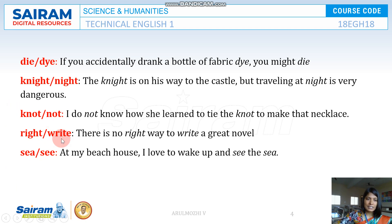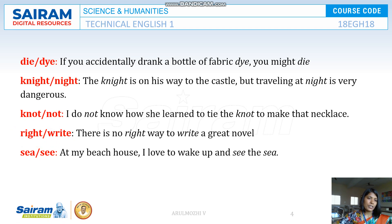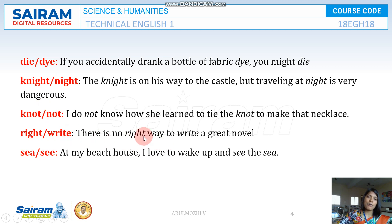Next is RIGHT and WRITE. RIGHT refers to somebody's rights — for example, you have the right to speak wherever you want. And WRITE means writing something down. For example, there is no right way to write a great novel.